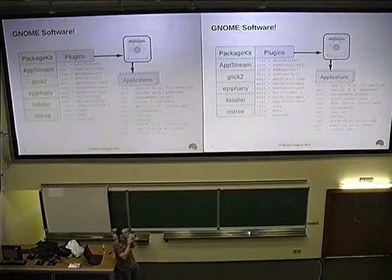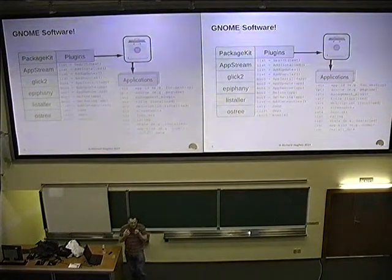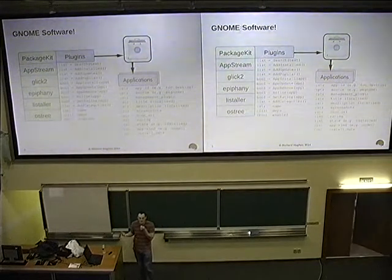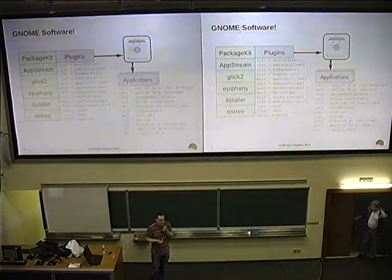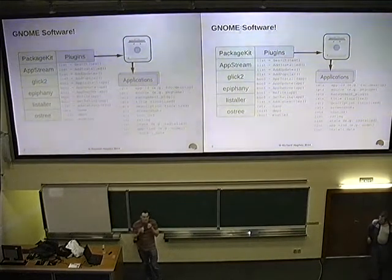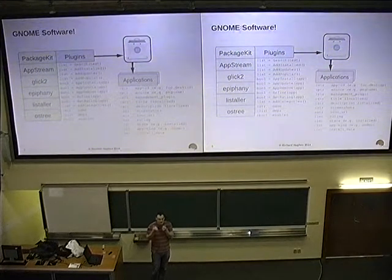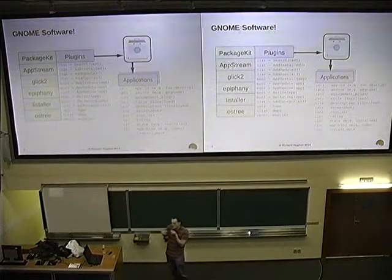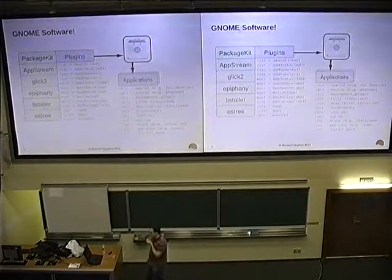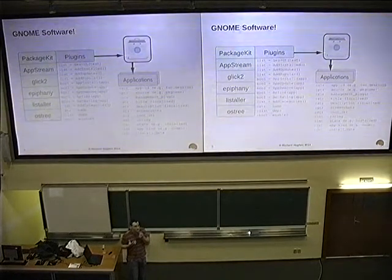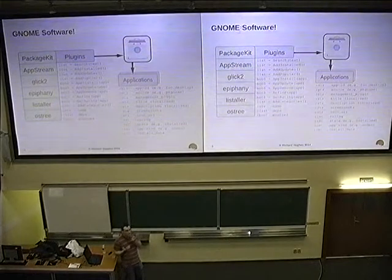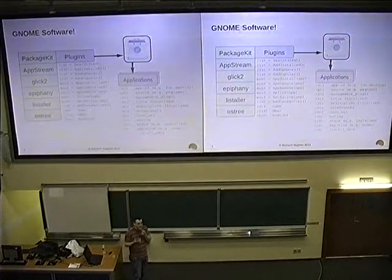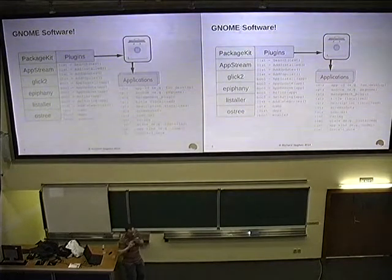An application — and it's a massively overloaded term — could be argued to include PowerTop, Vim, or Postgres. But from my point of view, I'm using the AppStream definition: it has a desktop file and would be visible in the menus, which is quite a restrictive definition. There are also things we do want to show in the Software Center — called add-ons — which might be fonts, codecs, and similar things that are interesting to the user but aren't traditionally an application.